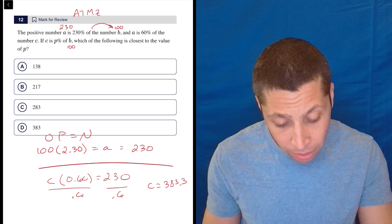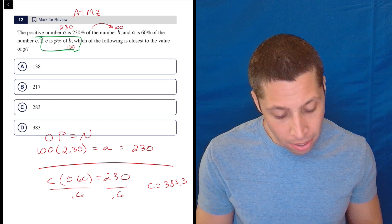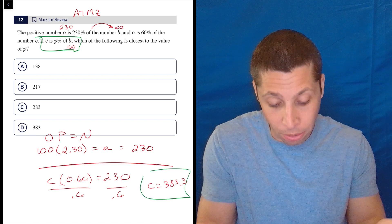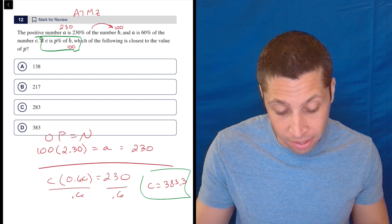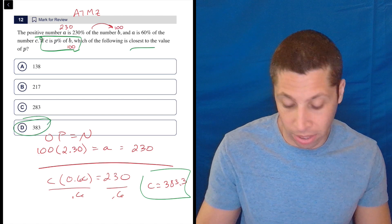So now when they ask the final question, C is what percent of B, 383.3 is, I don't know, 383% of 100. It's pretty easy and we just need the closest value. So yeah, it's a decimal, but it doesn't really bother me too much. There you go.